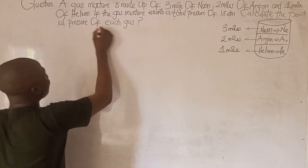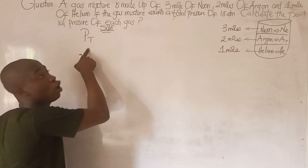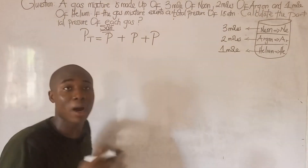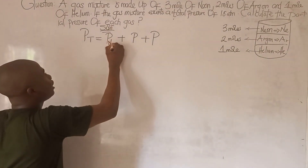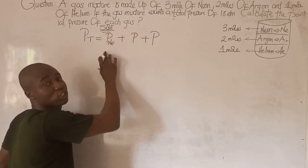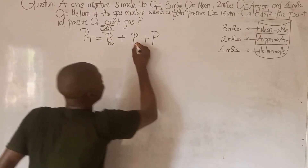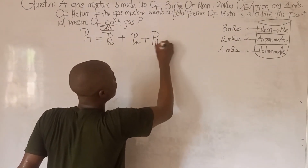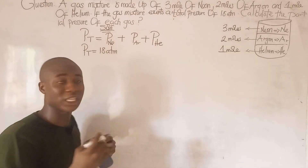Let's write out the mathematical expression for Dalton's Law of Partial Pressure. The total pressure P_t equals the sum of the partial pressures: partial pressure of Neon, plus partial pressure of Argon, plus partial pressure of Helium. The total pressure of the gas mixture was given as 18 atm. With all this, let's solve for the partial pressure of each gas.